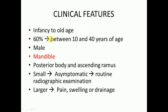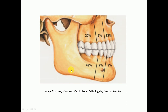Regarding clinical features, OKC can be found from infancy to old age, and sixty percent of cases are found in patients between 10 and 40 years of age. They are most commonly present in the posterior body and ascending ramus of the mandible. Small lesions are asymptomatic and diagnosed on routine radiographic examination; larger lesions cause pain, swelling, and drainage. The posterior body and ramus area comprises 49 percent of occurrences.